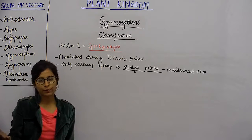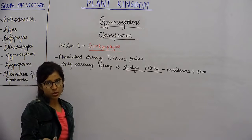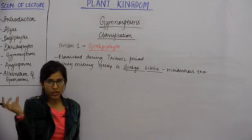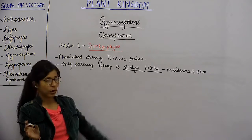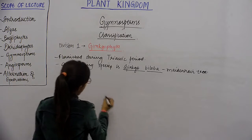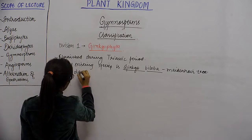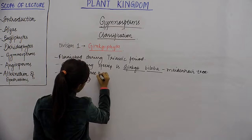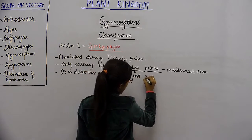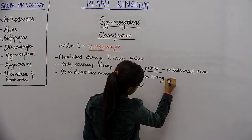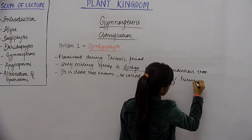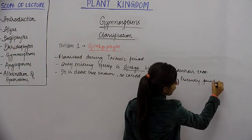Ginkgo biloba is called the maidenhair tree because there is a fern in Pteridophytes that is also called by a similar name. It is the oldest tree known and is therefore called a living fossil. It is presently found in China.